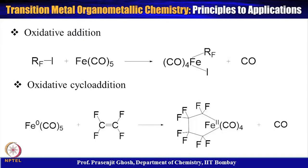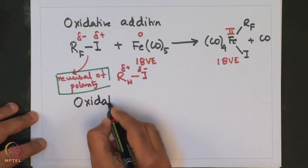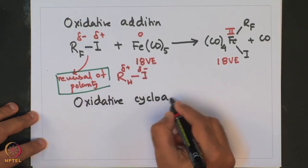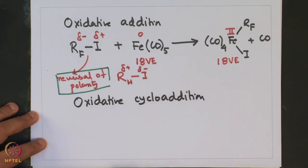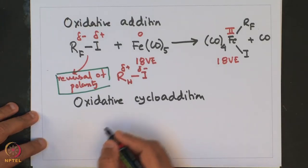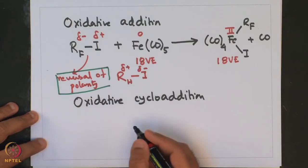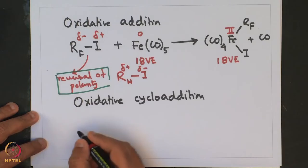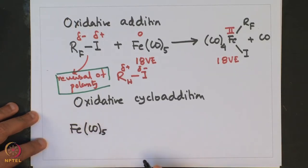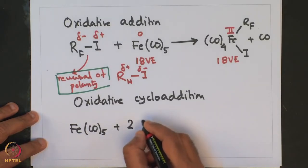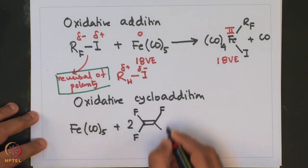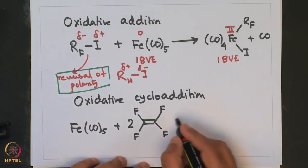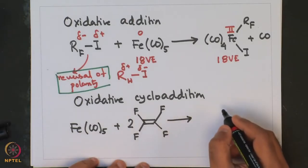Another method is called oxidative cycloaddition. This involves addition of an olefin perfluoroalkyl compound resulting in a metallocycle of the type shown. Here, a low valent iron centre reacts with two molecules of C2F4 (perfluoroethylene), giving a five-membered metallocycle.